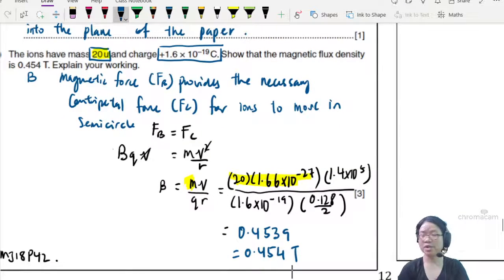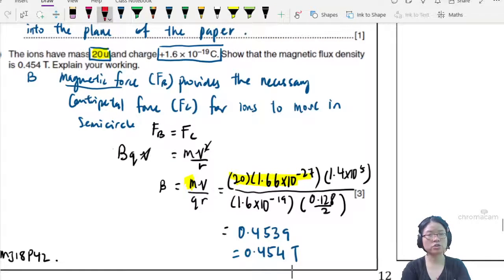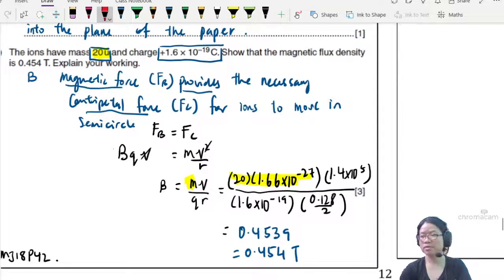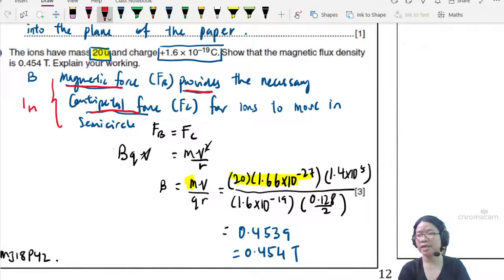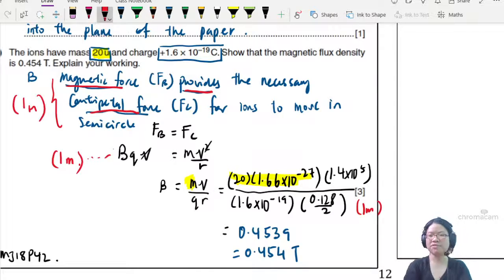So if you're wondering where the mark is, one mark is the concept: magnetic force provides centripetal force. This is one mark. And the other mark is when you have this equation. And the final mark is the substitution mark. So you substitute all the correct values and convert whatever that needs to be converted to SI units. So this problem is 3 marks. Fairly standard and very similar to summer 18.